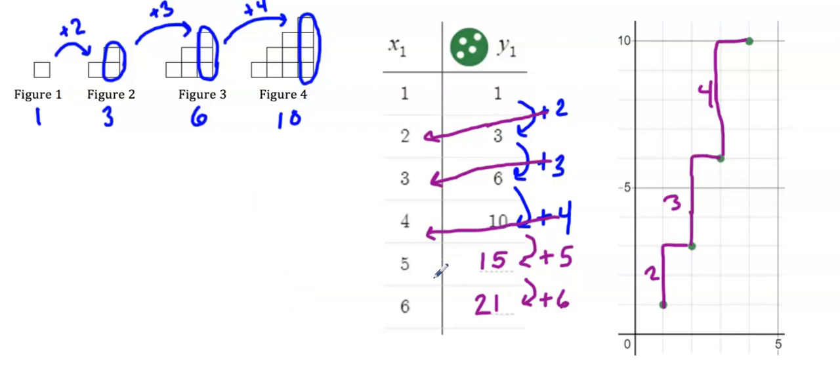Which means recursively, what I'm adding each time from the previous is just the value of x. So each time I want to get to the next term, for example, when I wanted to get to the sixth term, I had to add six to the previous term. So that means recursively, I have to take the previous term, f(x-1), and add x.